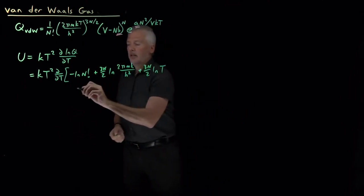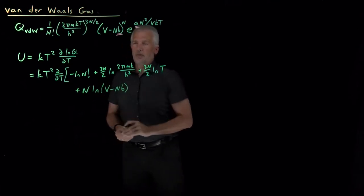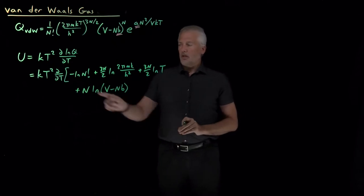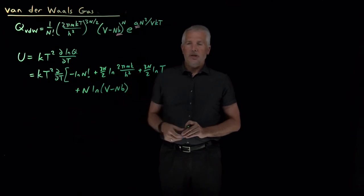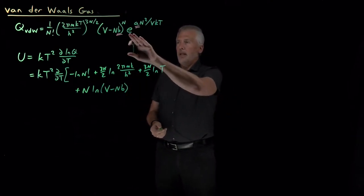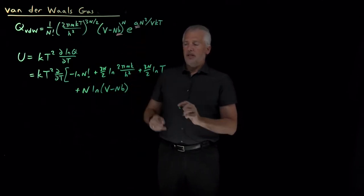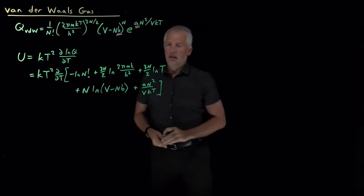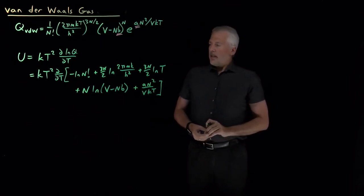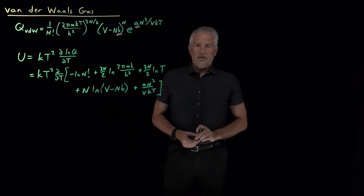We also have N log(V − Nb), which is similar to the ideal gas but with the molecular volume correction. And the log of the exponential term is straightforward: log of e^(an²/VkT) is just an²/VkT. So that expression gives us everything we need to find the internal energy of the van der Waals gas.